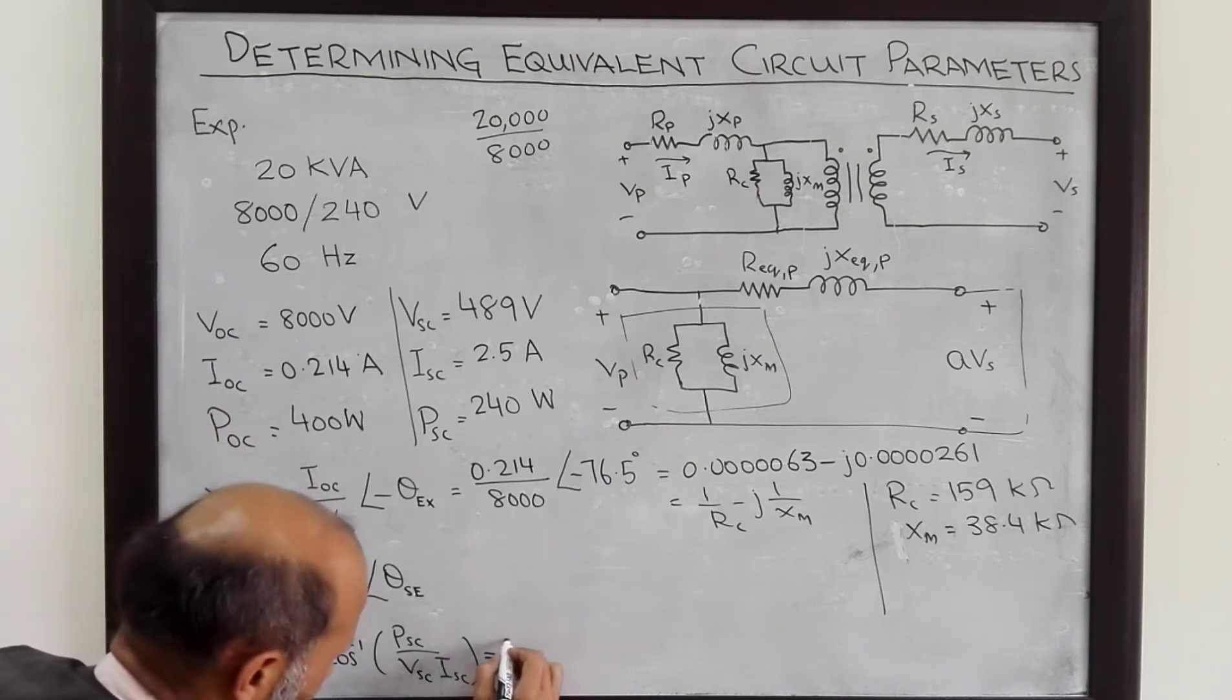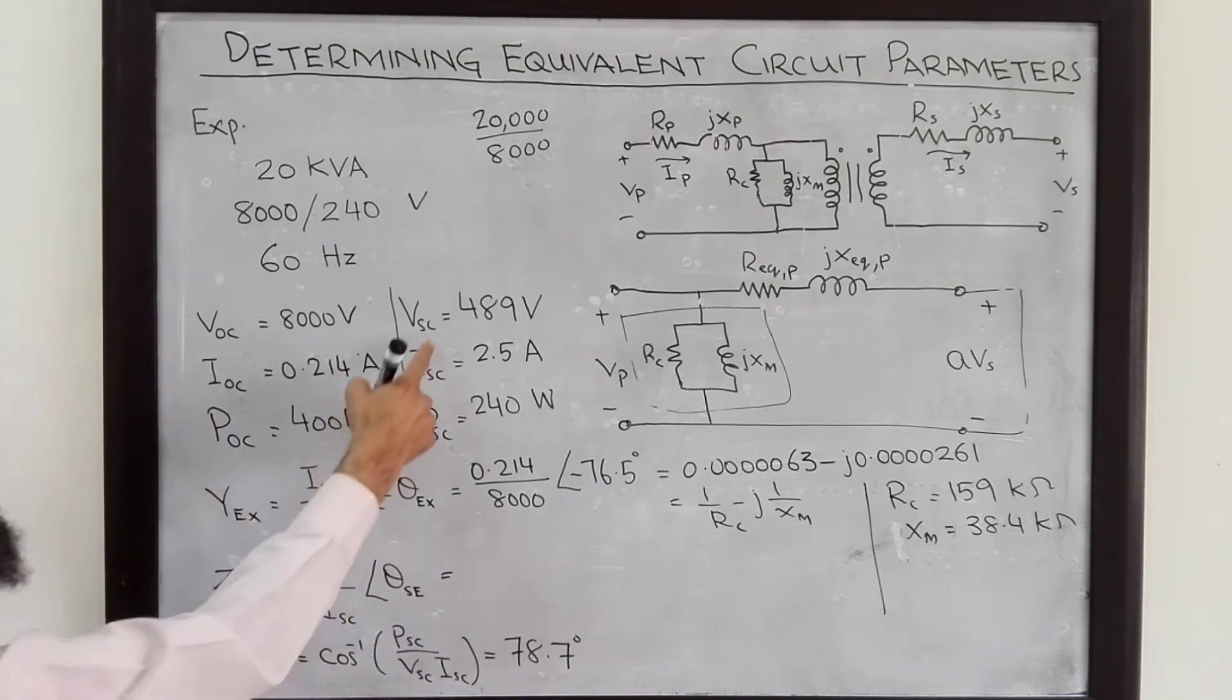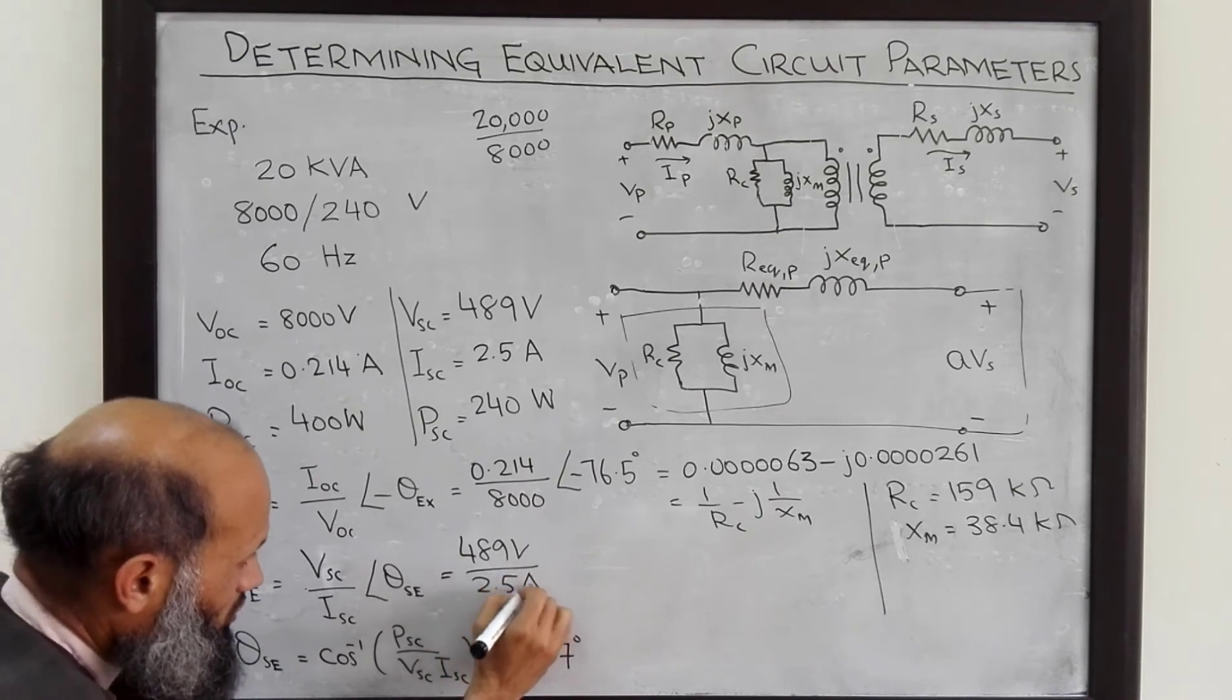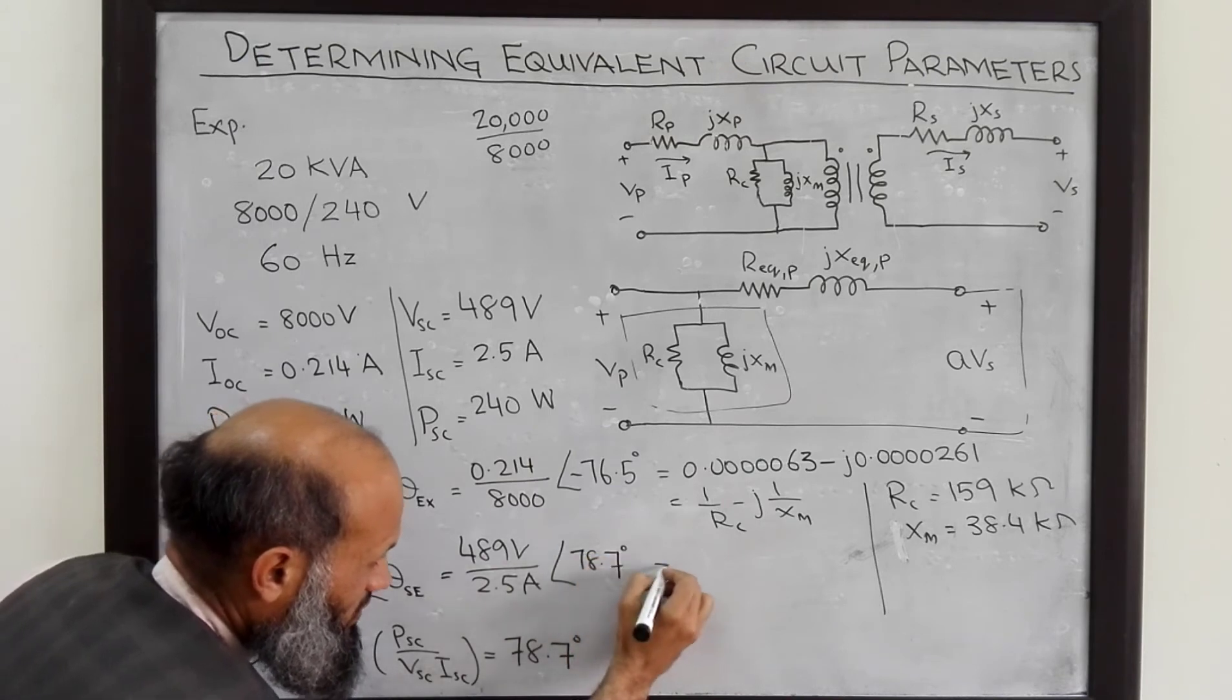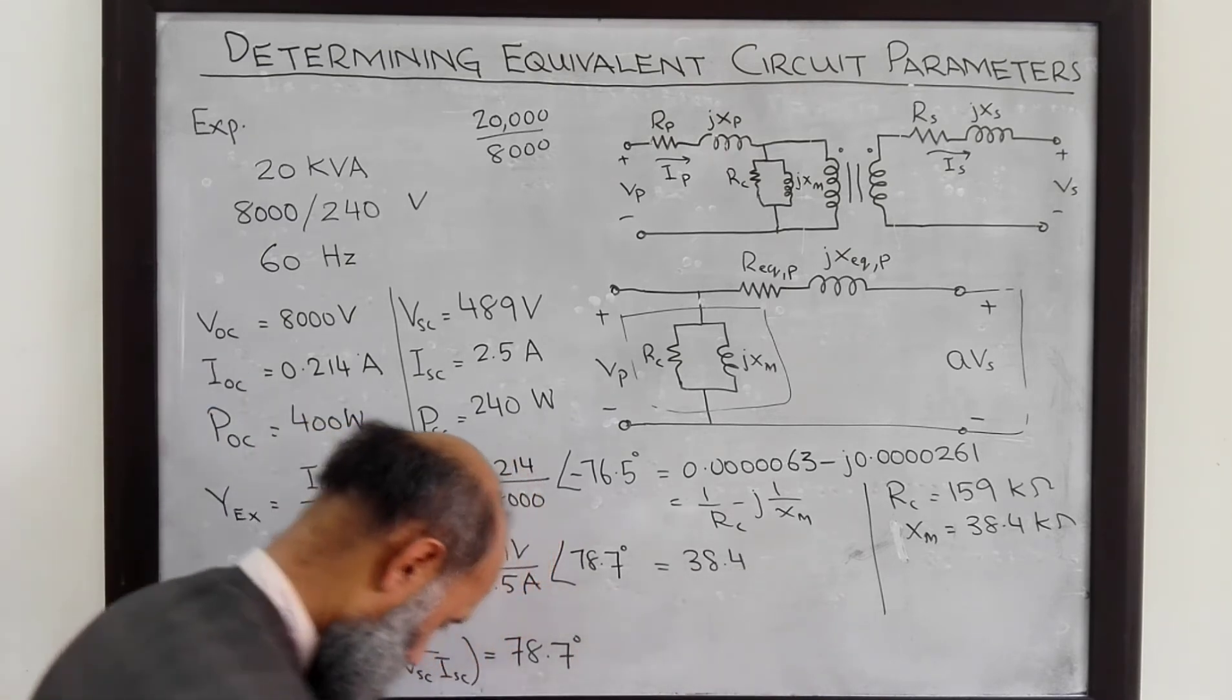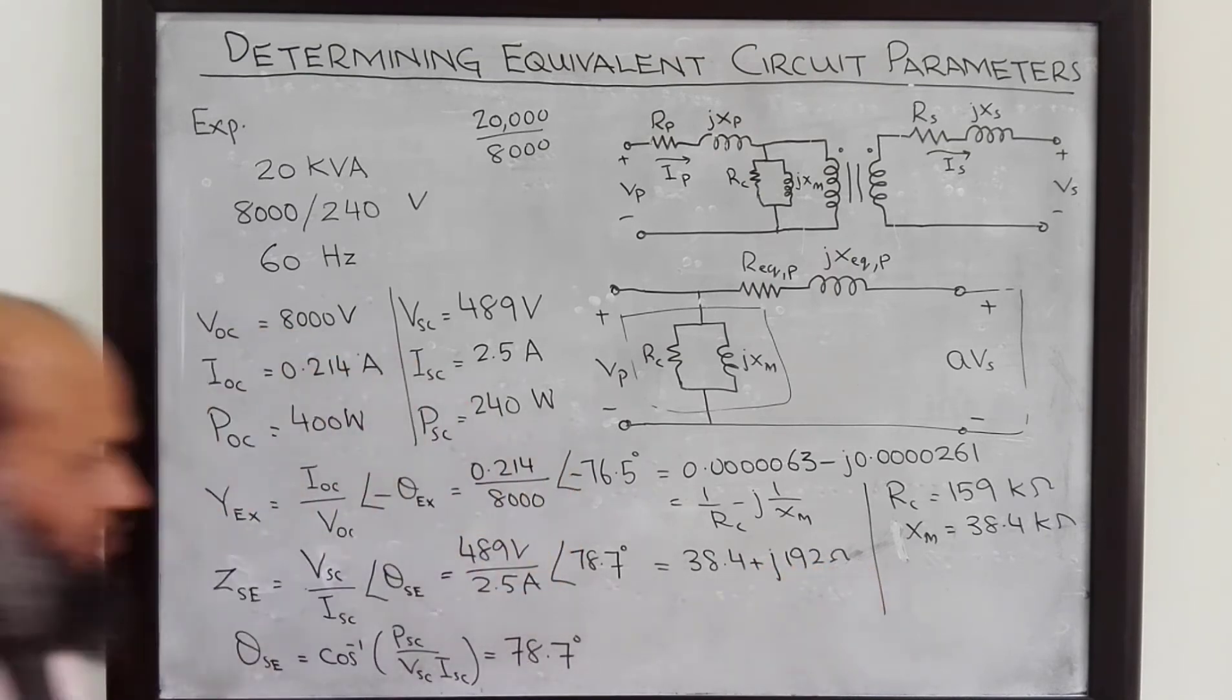And hence this series impedance, V short circuit 489 volts divided by I short circuit 2.5 amperes and an angle of 78.7 degrees. Writing this complex number in rectangular form we have 38.4 plus j192 ohms.